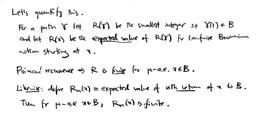Let's quantify this recurrence statement. Given a parametrized path gamma, let R gamma be the smallest positive integer such that gamma i is contained in the set B. And then let R of x be the expected value of R of gamma, where gamma is leafwise Brownian motion starting at the point x. Then Poincaré recurrence is equivalent to the statement that R is finite for mu almost every point x in the Borel set B.